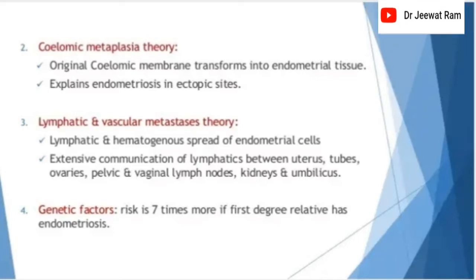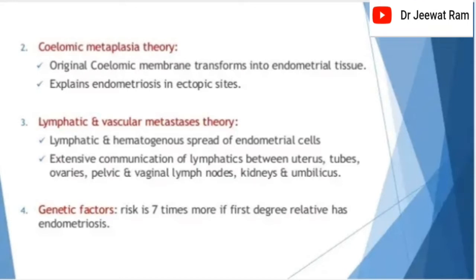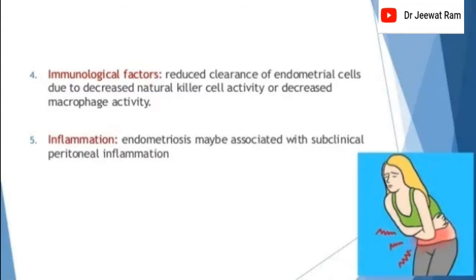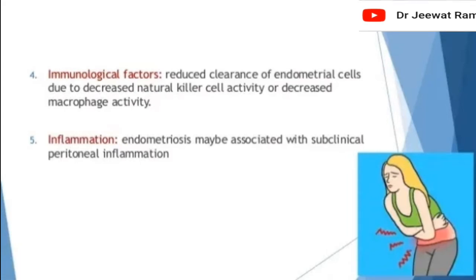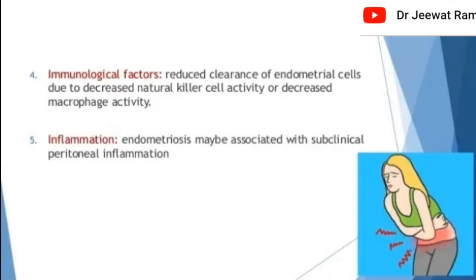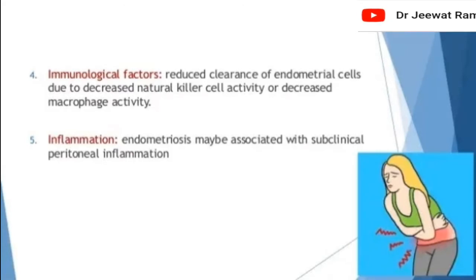Genetic factors: risk is seven times more if a first-degree relative has endometriosis. Immunological factors: reduced clearance of endometrial cells due to decreased natural killer cell activity or decreased macrophage activity. Inflammation: endometriosis may be associated with subclinical peritoneal inflammation.